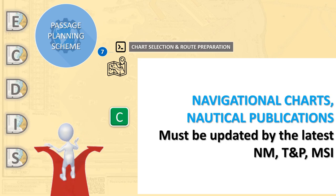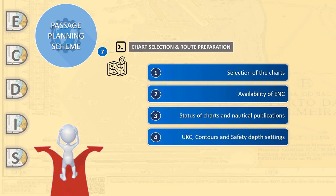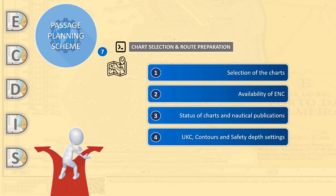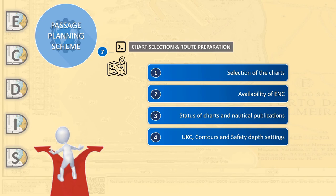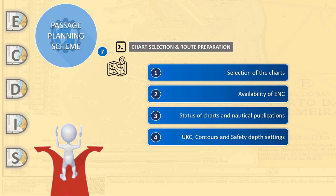Incidents that occurred in the past provide evidence of the importance of the right contour and value settings. Wrong settings have resulted in several groundings because critical shallow waters were not identified by watchkeeping personnel, and no proper alert was either activated or triggered. It should be borne in mind that on paper charts the navigator had to filter and interpret all chart data accordingly. This process of filtering in ECDIS is handled by the safety settings, which results in presentation of chart data instantly reduced to the information needed according to the voyage stage and the ship's particulars.